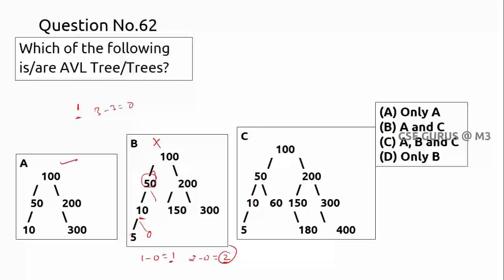For option C, checking node 50: left height two, right height one — difference is one, fine. Node 150: zero minus one, absolute value one — fine. Node 300 and 400 on the right side: absolute value one — fine. Node 200: left height two, right height two — difference zero. Node 100: both sides height three — zero difference. Only A and C are AVL trees, so option B is the correct answer.